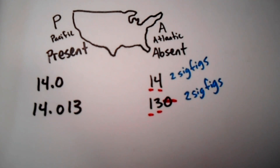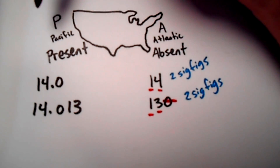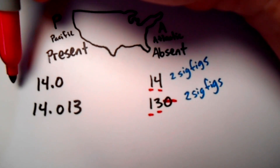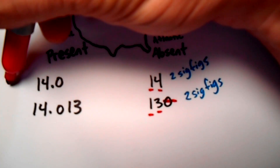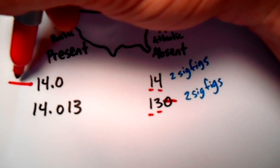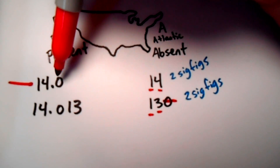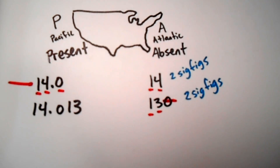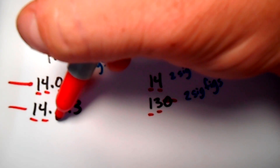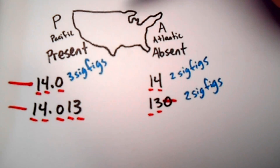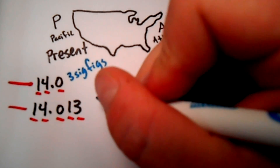On the Pacific side, decimals are present. For 14.0, we start on the left Pacific side and cross off any zeros until we get to the first non-zero number, which is the one. There are no zeros shown that are not sig figs — so the one, the four, and the zero are all significant figures, giving us three sig figs. For 14.013, since the decimal is present we start on the Pacific side and there are no zeros to cross off, so the one, the four, the zero, the one, and the three are all significant — that number has five sig figs.